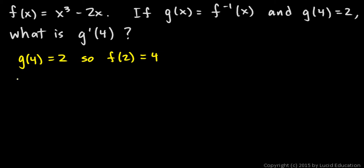Now we also know something about the slopes of inverse functions. g primed of 4 will have to equal the reciprocal of f primed of 2. So if we can find f primed of 2, the slope of f at x equals 2, then the reciprocal of that will be the answer.